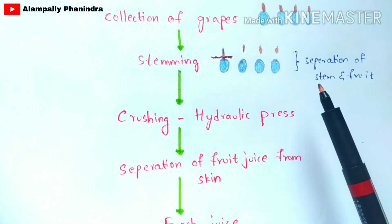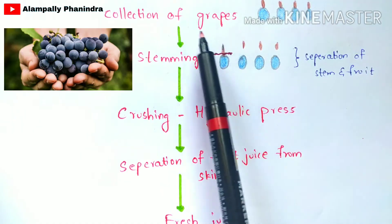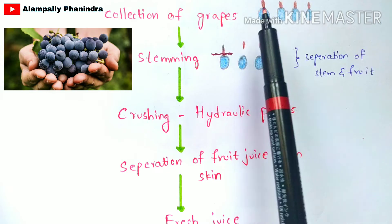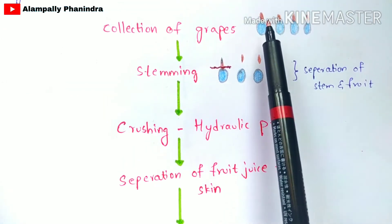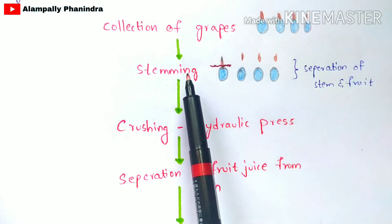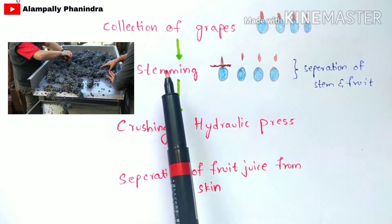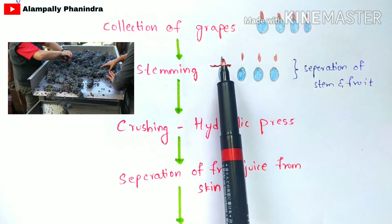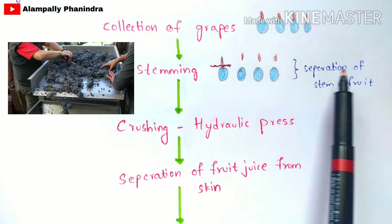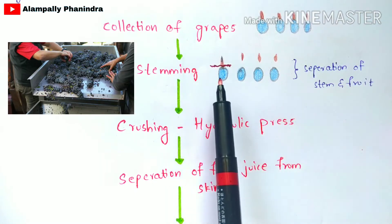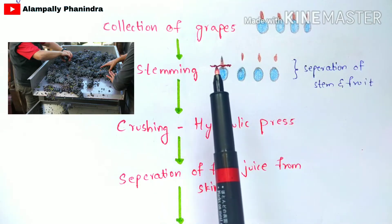The first step is the collection of grapes — taking grapes from the trees. The grapes consist of both the stem and the fruit, as the stem will be attached to the grapes. In the next step, you perform the process of stemming, which means separating the stem from the fruit. Look at the pictures provided on the left side for reference.